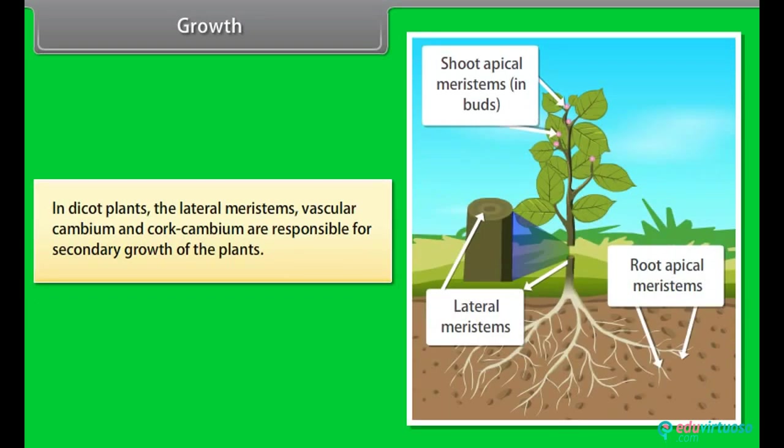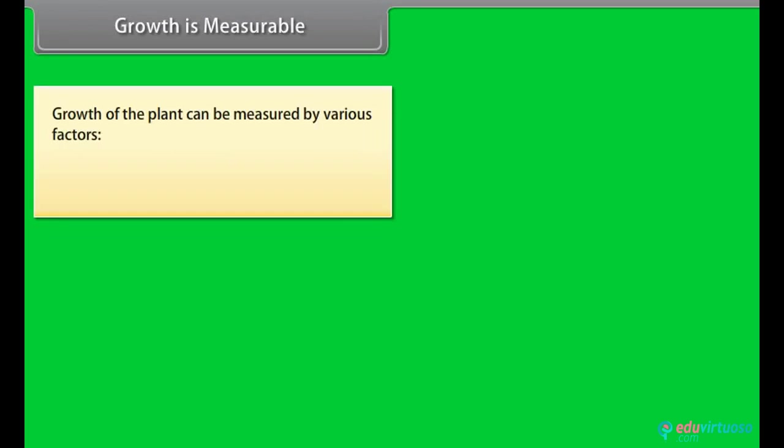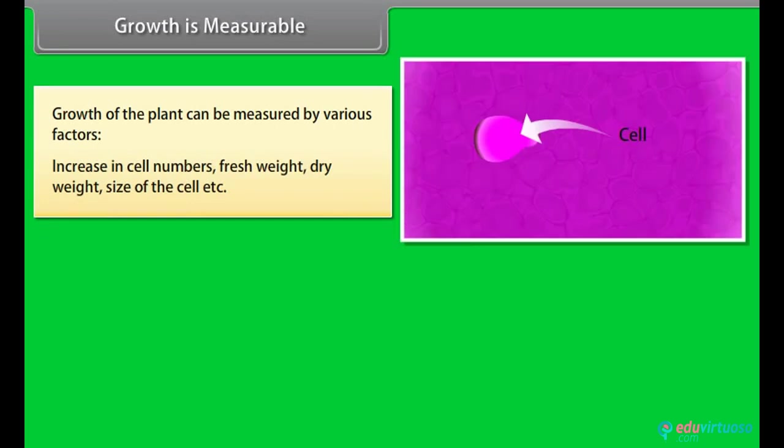The root apical meristem and shoot apical meristem are primarily responsible for the elongation of the plant along its axis. In dicot plants, the lateral meristems, vascular cambium and cork cambium are responsible for secondary growth of the plants. Growth is measurable. Growth of the plants can be measured by various factors: increase in cell numbers, fresh weight, dry weight, size of the cell, etc.